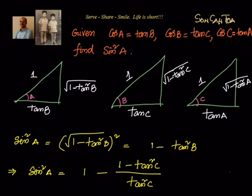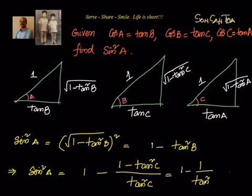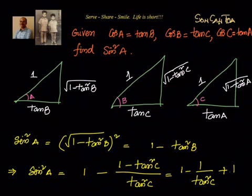We can simplify this to write 1 minus 1 over tan²C plus 1, which equals 2 minus 1 over tan²C. So we now have sin squared A expressed in terms of C.